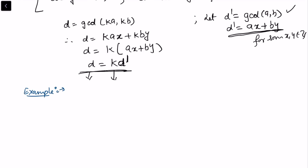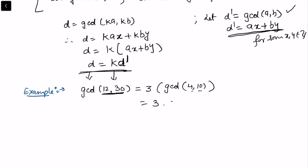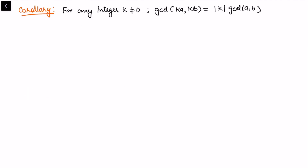Taking an example: to find gcd(12, 30), we can factor out the common value. The common factor is 3, so inside we have gcd(4, 10). Again we can factor out 2, giving gcd(2, 5). Since 2 and 5 are relatively prime, gcd(2, 5) = 1. So the result is 3 × 2 × 1 = 6, and gcd(12, 30) = 6.